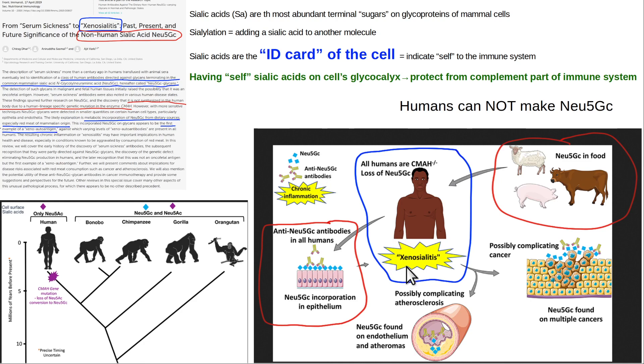This is called xenosialitis. Neu5GC should not be there, so the immune system will attack it and form a big immune response that damages tissue. It's associated with atherosclerosis, increased risk of cancer, and other problems with chronic inflammation. Humans make Neu5Ac but do not make Neu5GC. We especially get it from beef and dairy, so you don't want to be eating beef and dairy at all - not one bite.